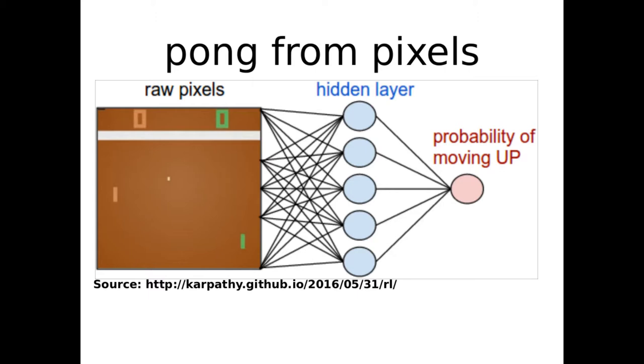In Deep RL, a neural network between input state and output actions is called a policy network.